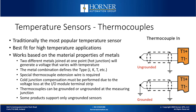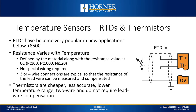A further complication is that thermocouples might be either grounded or ungrounded at the tip. Some IO modules will only support ungrounded sensors, while others will support both. RTDs are very cost effective and can be used at temperature ranges between minus 200 degrees Celsius and plus 800 degrees Celsius. Their resistance varies with temperature. They're typically named based on their material and resistance value at zero degrees — so a PT100 is a platinum resistor where the resistance value is 100 ohms at zero Celsius. You do need to connect at least three wires to the sensor so the resistance of the lead wire can be measured and compensated.